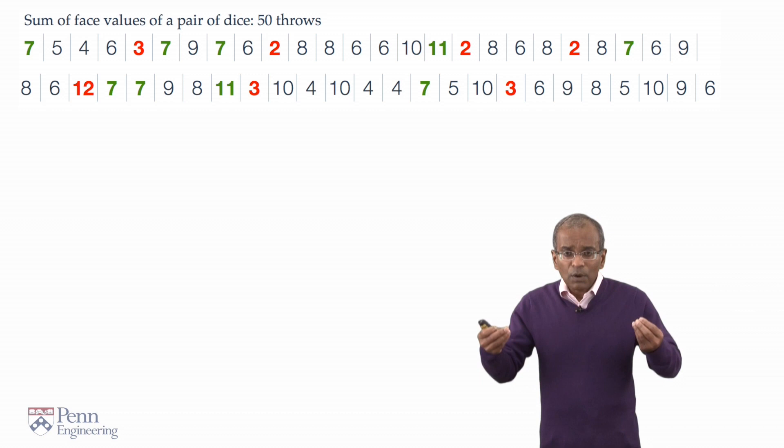Remember, we are throwing the dice and we are summing the face values. You will observe that some of the letters are in red and some of them are in green. And now let us put this in the context of the game itself.